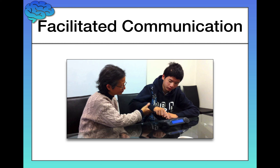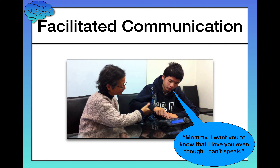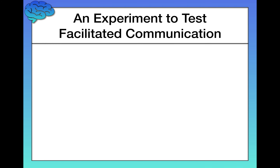From this simple intervention, what we saw is that children who were previously mute — who didn't communicate at all — were now typing out complete sentences, for example: 'Mommy, I want you to know that I love you even though I can't speak.' It became a national phenomenon used everywhere. But scientists, being skeptical as they should be, looked at this and wanted to test whether it was actually working as intended, so they devised an experiment.